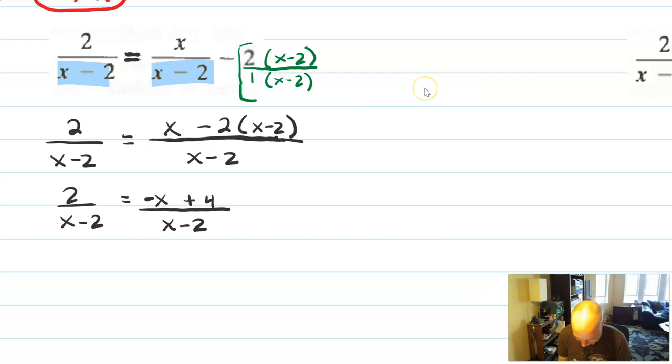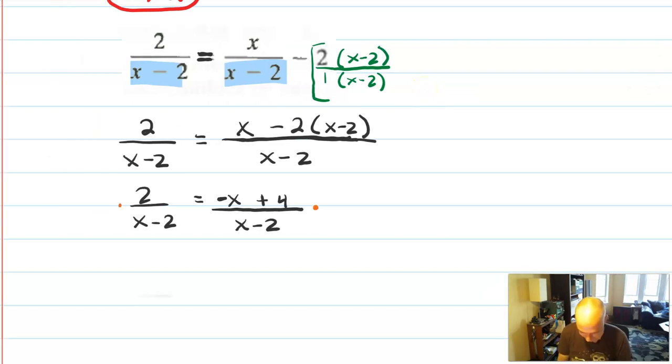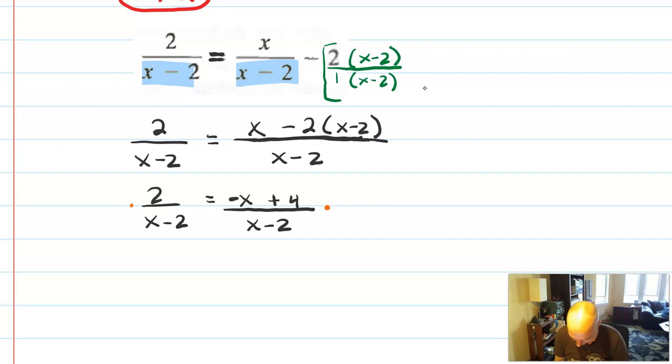So, instead, what I want to think about is I want to multiply both sides by something. It can be anything I want, but it has to be something that will help me with the denominator. So, I'm going to multiply by x minus 2 on both sides. And if you do that, those will reduce out to 1 as long as x is not equal to 2. So, we have 2 is equal to negative x plus 4.